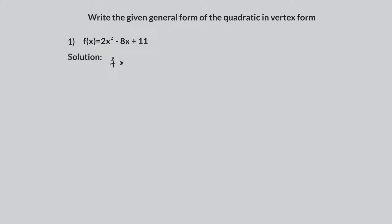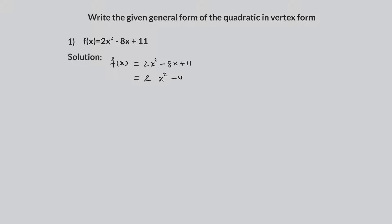Write the general form of the given quadratic in vertex form. f of x equals 2x squared minus 8x plus 11. By taking 2 as a common factor between the first two terms, we have 2 times x squared minus 4x plus 11.